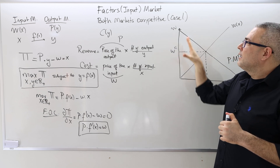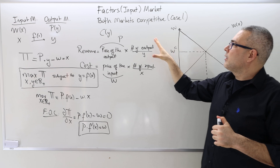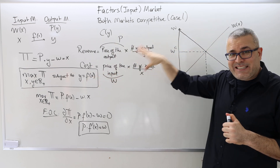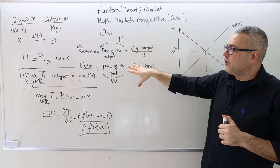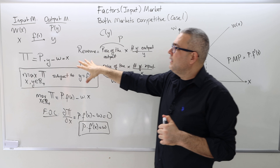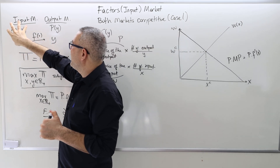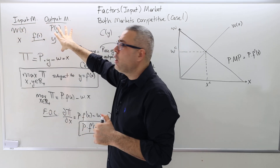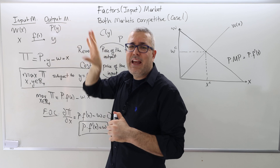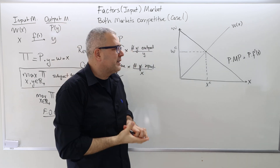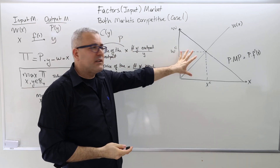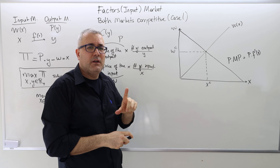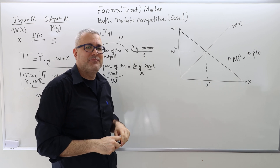Now I'm going to talk about Case 2, where this exact same firm is perfectly competitive in the input market but a monopolist in the output market, then make the comparison and show on this graph how things would change.